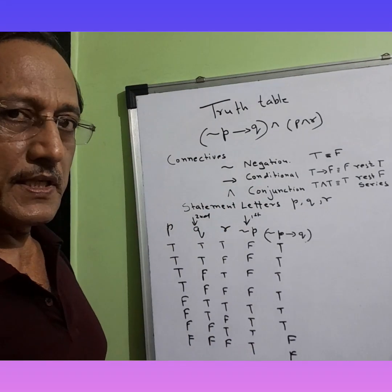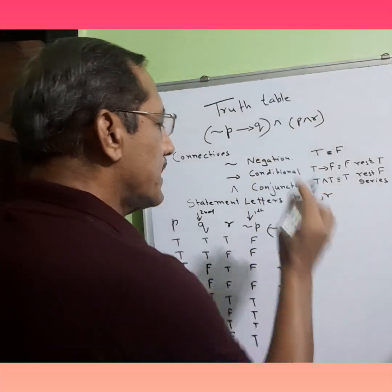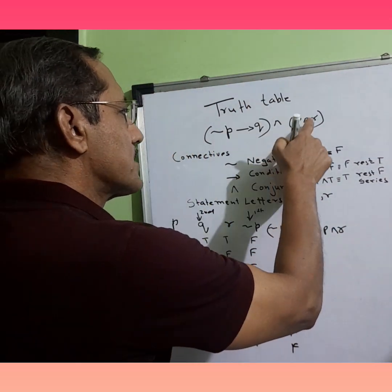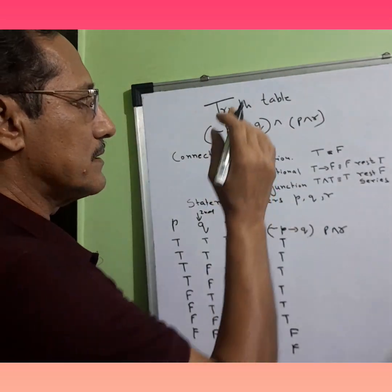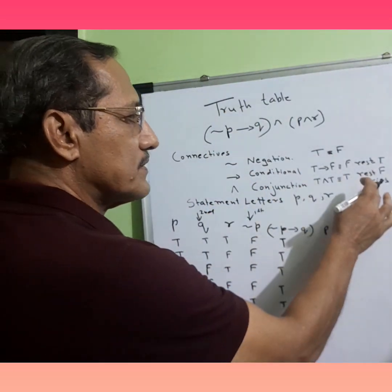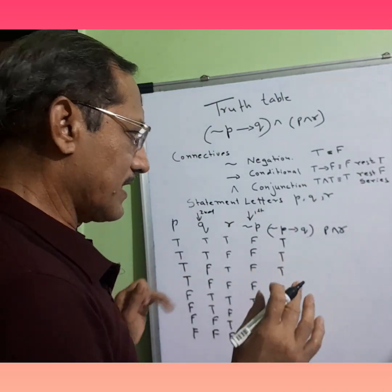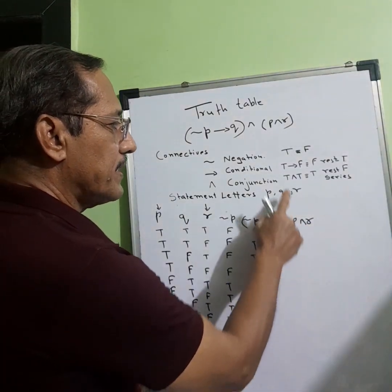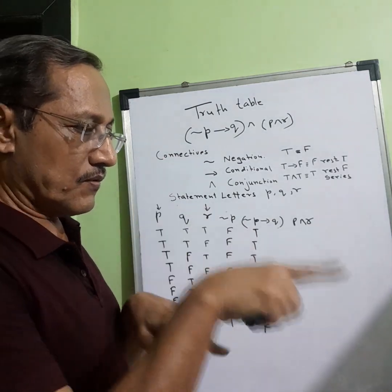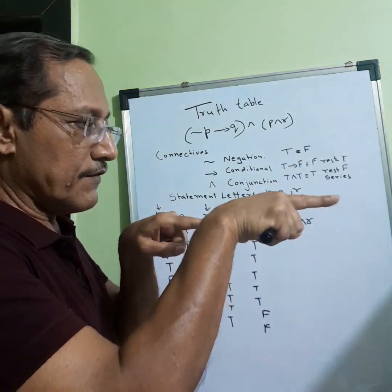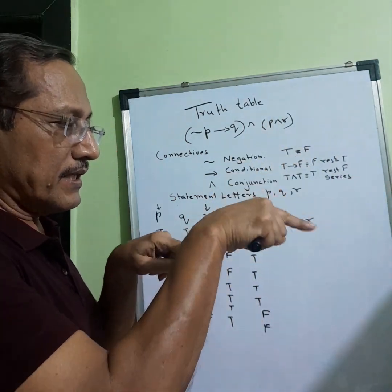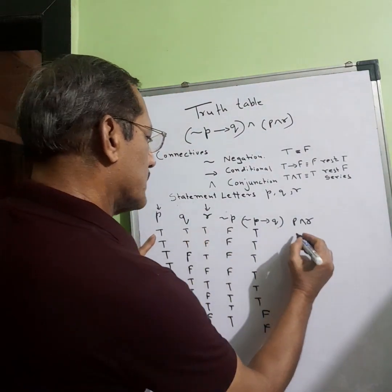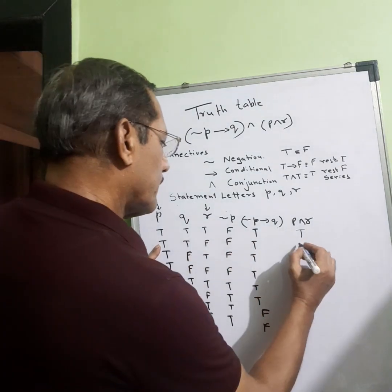Now let's look at p conjunction r. Thinking of it as a series circuit — both switches have to be closed for the bulb to glow. So we check p and r: T and T is T, T and F is F, F and T is F — let's mark through all the rows.